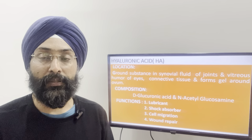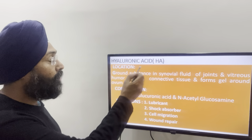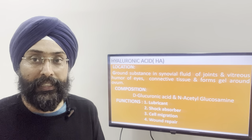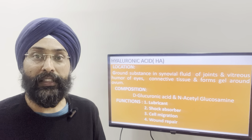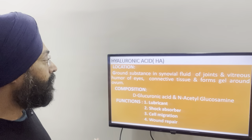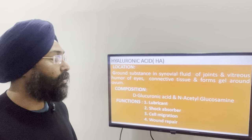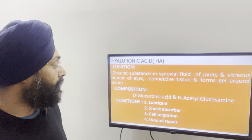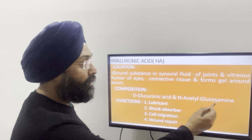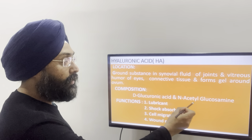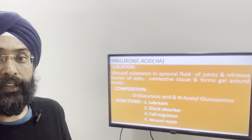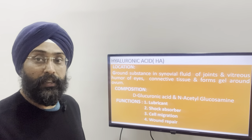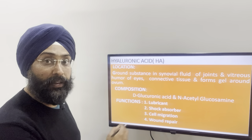Starting with the first mucopolysaccharide, H, that is hyaluronic acid. We will discuss three aspects of each heteropolysaccharide: their location, composition, and functions. Hyaluronic acid's location — it forms ground substance in synovial fluids of joints and vitreous humor of the eye, and it also forms a gel around the ovum. The composition is D-glucuronic acid and N-acetyl glucosamine. Its functions include acting as a lubricant and shock absorber in joints, and it also helps in cell migration and wound repair.